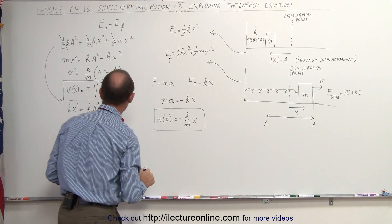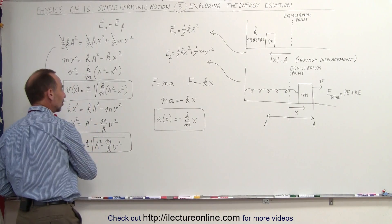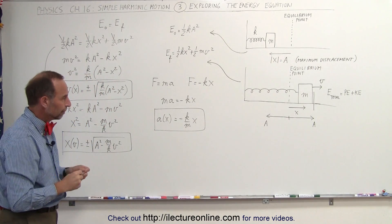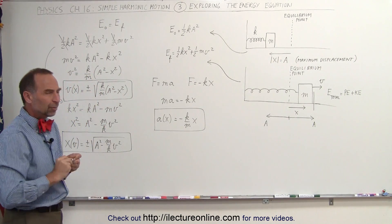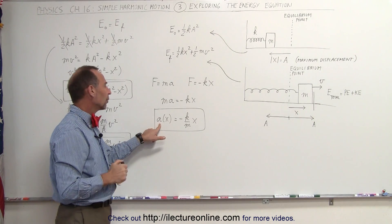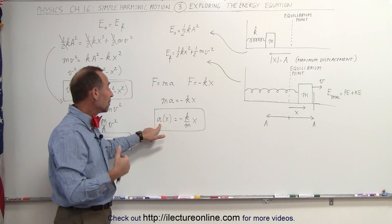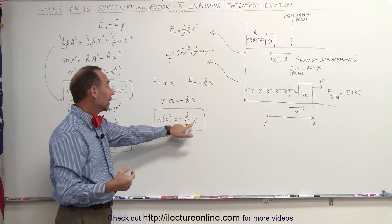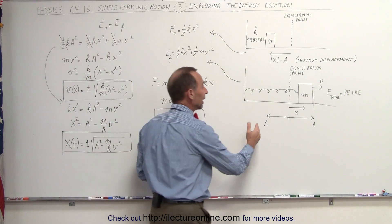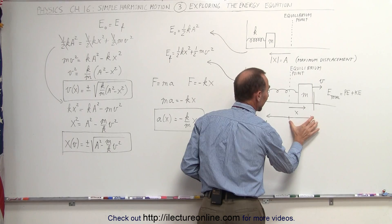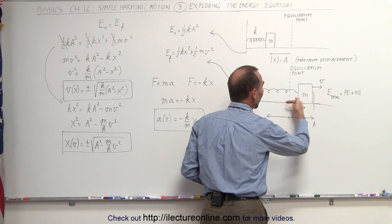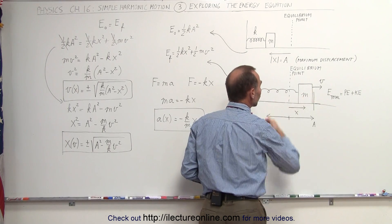These three equations allow us to solve for velocity, position, and acceleration using the energy equation. The acceleration will be maximum when x is a maximum value — in other words, when x is all the way to the right, when x equals A — and we get the maximum acceleration, which will be directed towards the left.